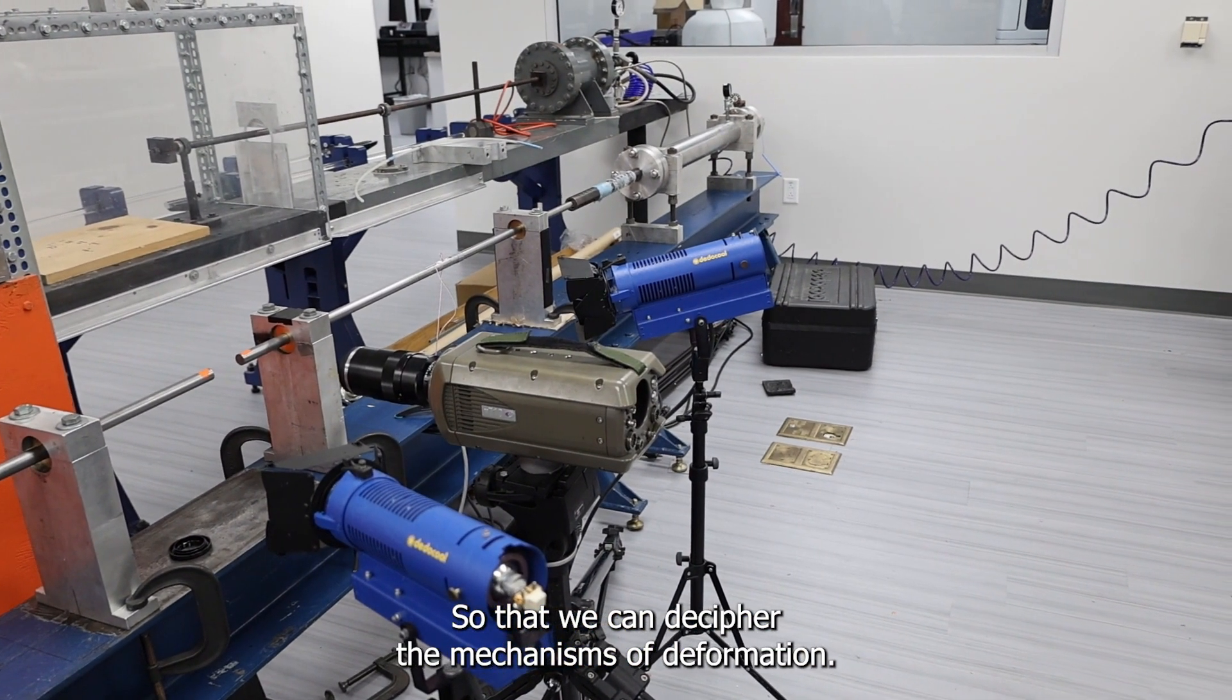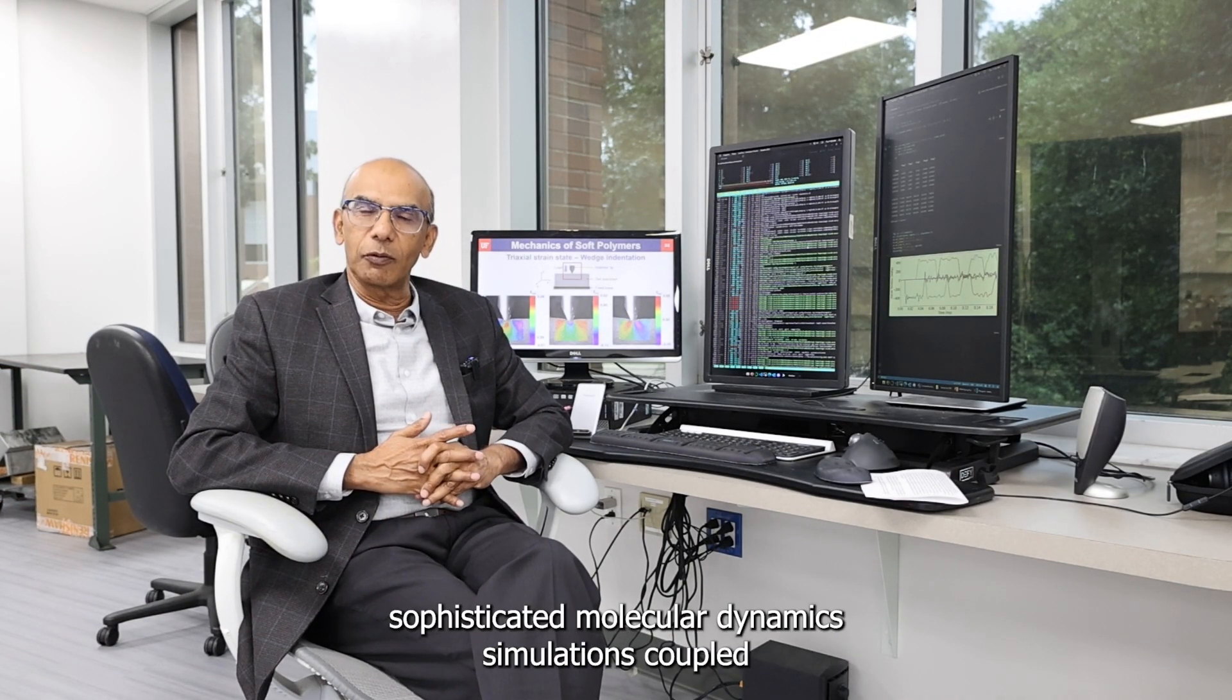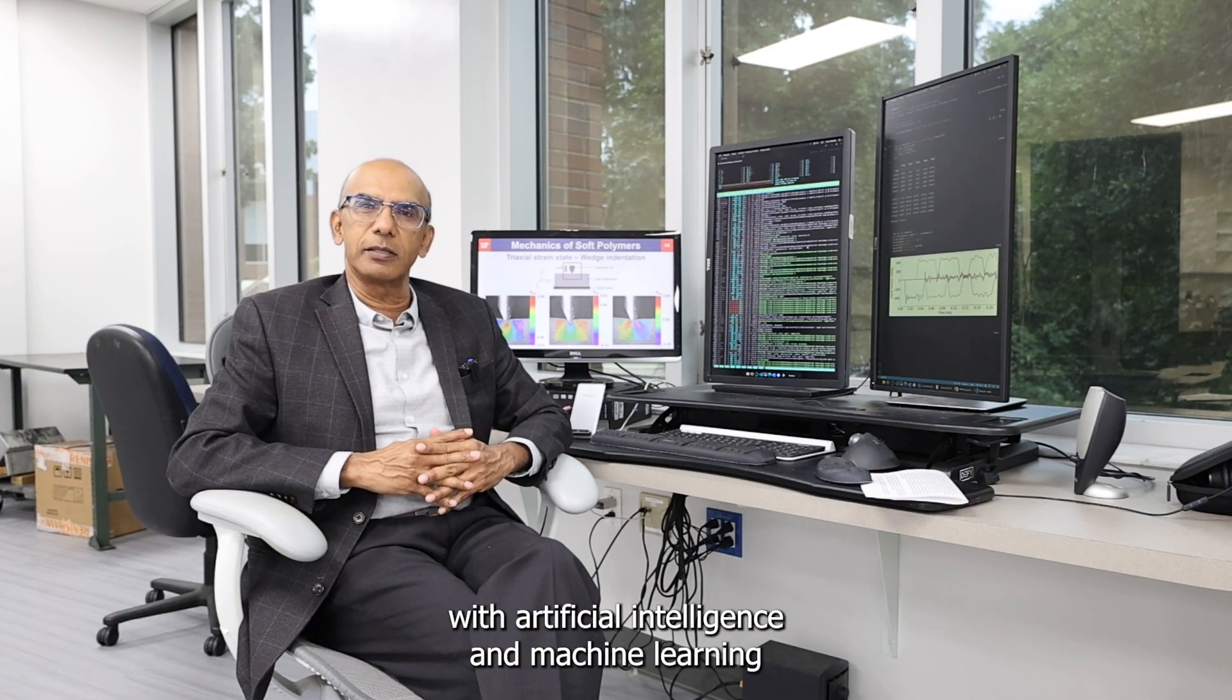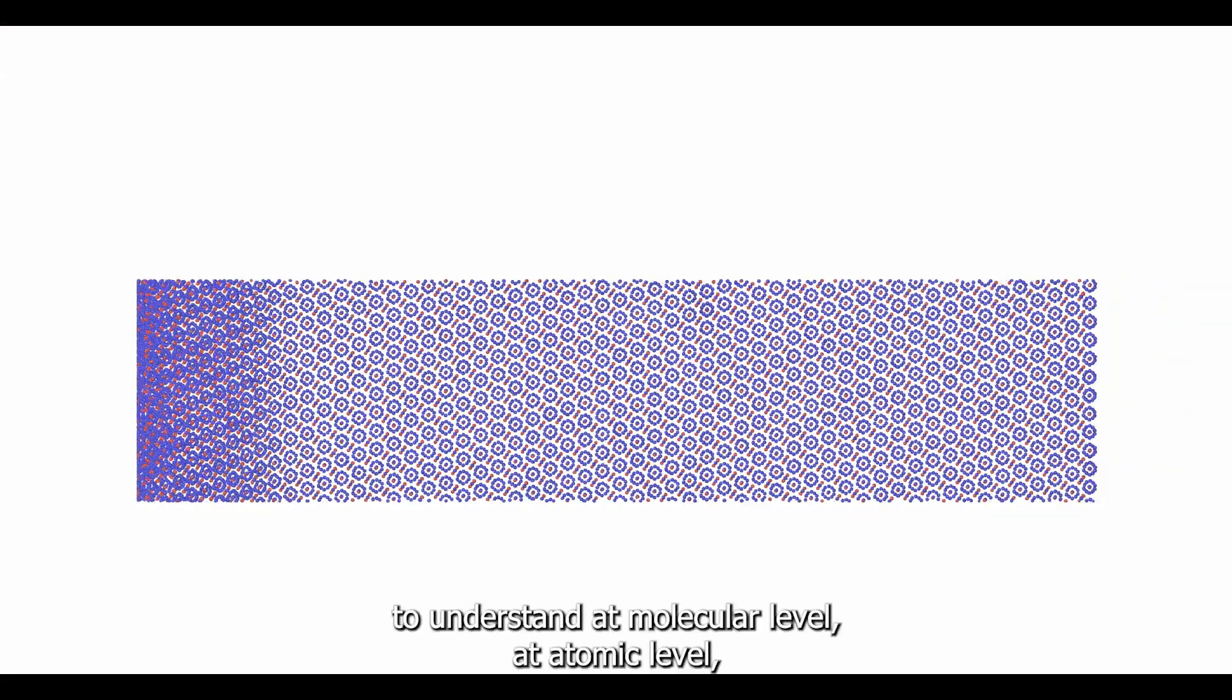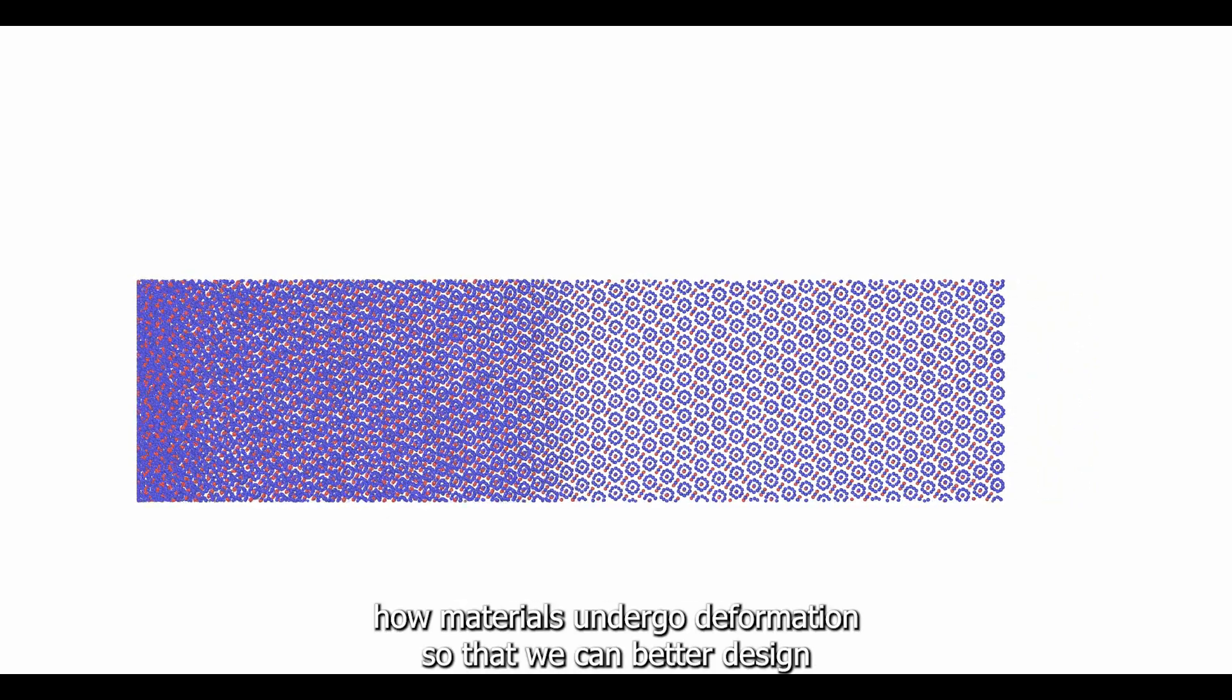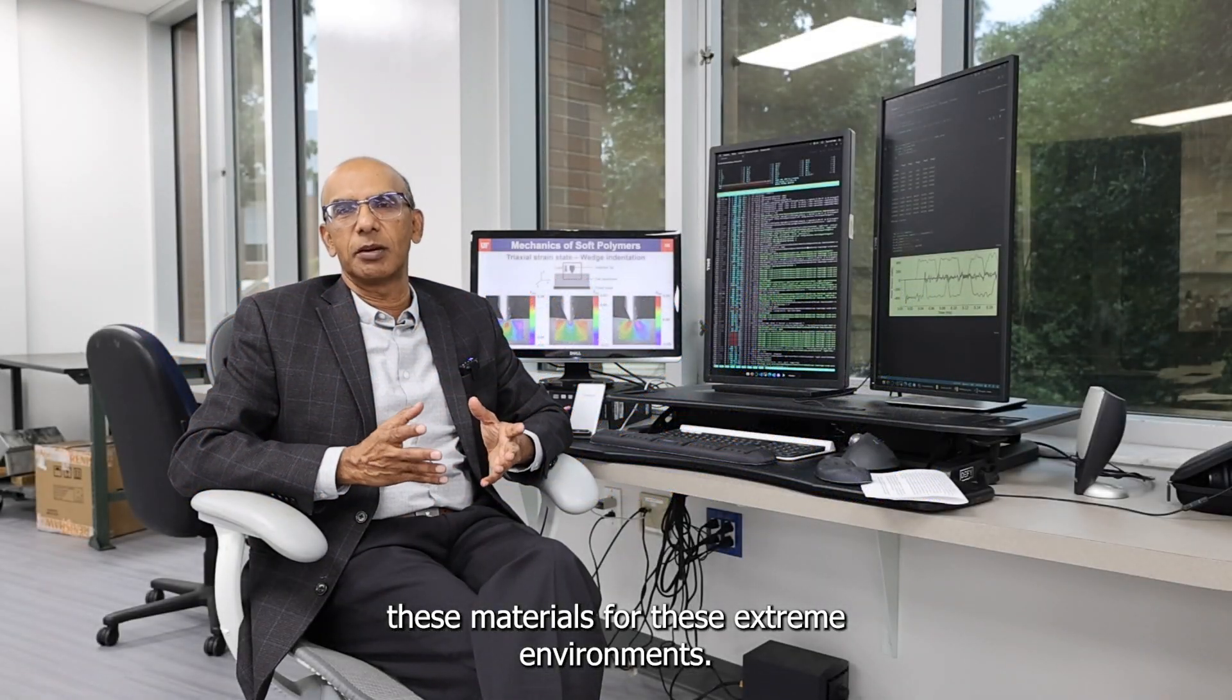We can decipher the mechanisms of deformation. In addition to experiments, we also do sophisticated molecular dynamics coupled with artificial intelligence and machine learning on our supercomputer at University of Florida to understand at molecular level, at atomic level, how materials undergo deformation so that we can better design these materials for these extreme environments.